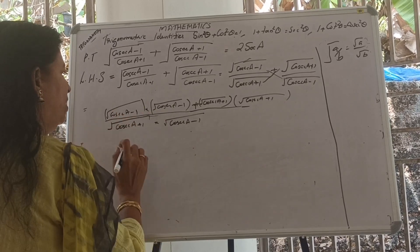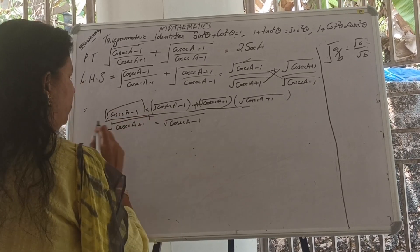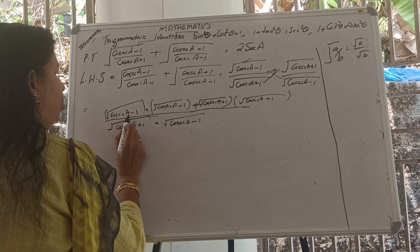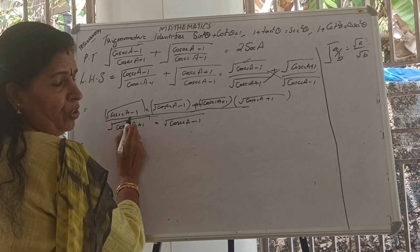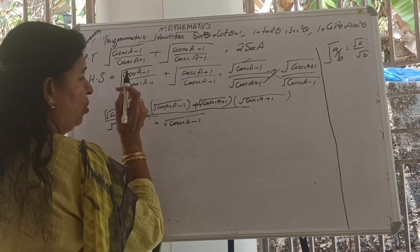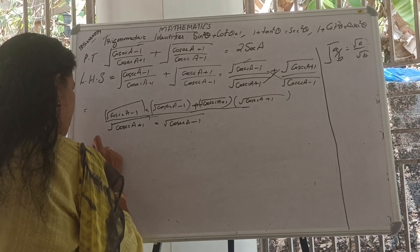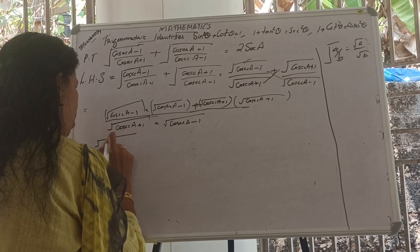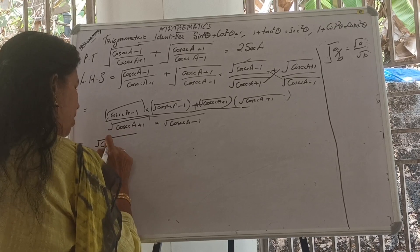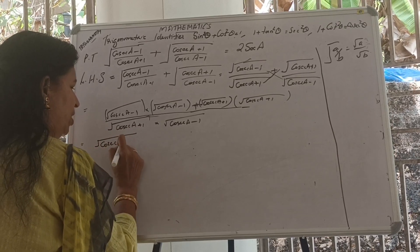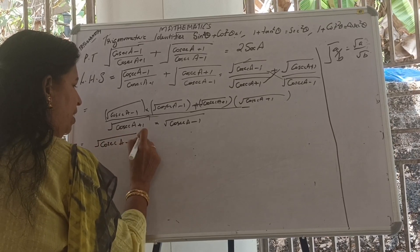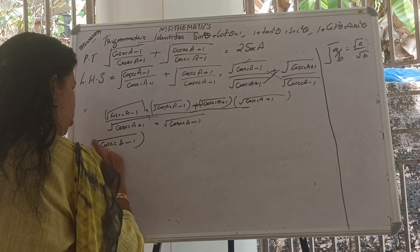The numerator simplifies: root of (cosec A minus 1) into root of (cosec A minus 1) is (cosec A minus 1) squared under the root, and root of (cosec A plus 1) into root of (cosec A plus 1) is (cosec A plus 1) squared under the root.